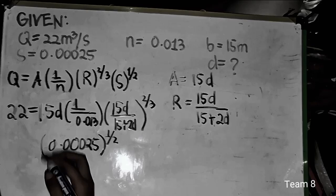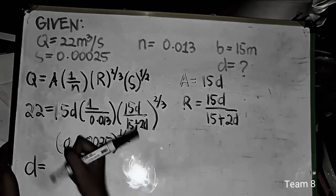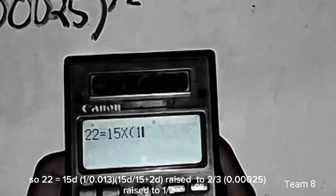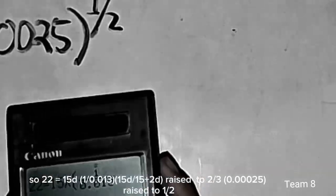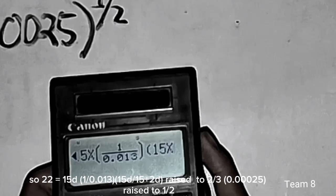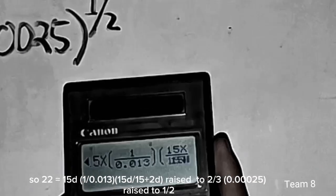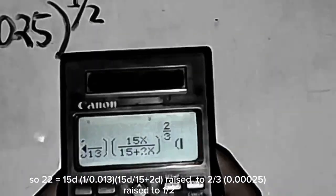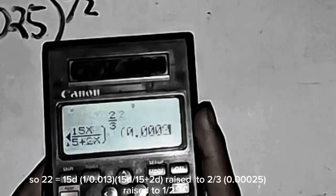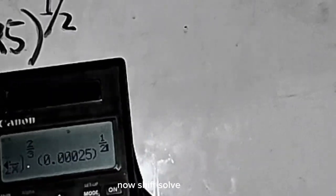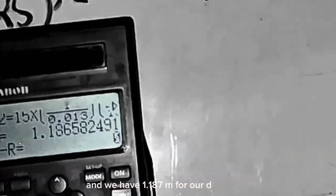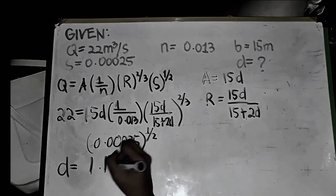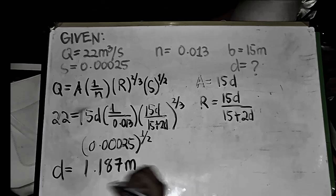So to find our D, let us calculate and see our results. So we have here 22 equals 15D times 1 all over 0.013 times 15D all over 15 plus 2D raised to 2/3 times 0.00025 raised to 1/2. And calculate it, then we have 1.187 meter for our D. And here is our final answer.